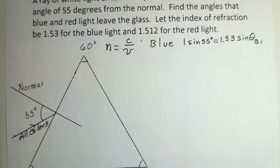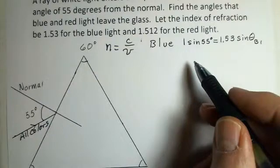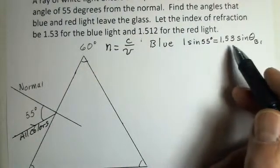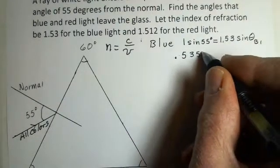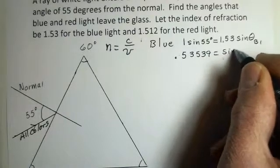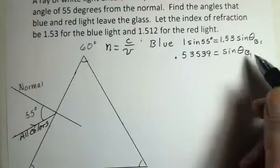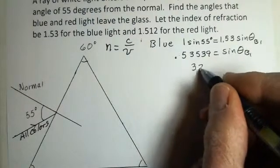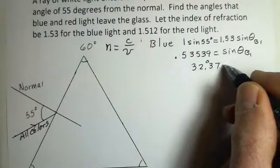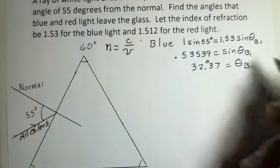In this scheme, we have a blue angle. I'll use the protractor once we calculate it. Processing this, sine of 55 degrees divided by 1.53. Again, you should check my work with your calculator. 0.53539 equals sine of theta blue 1. Take inverse sine of both sides as we've done in the past. 32.37 degrees is the angle inside the glass for the blue light.